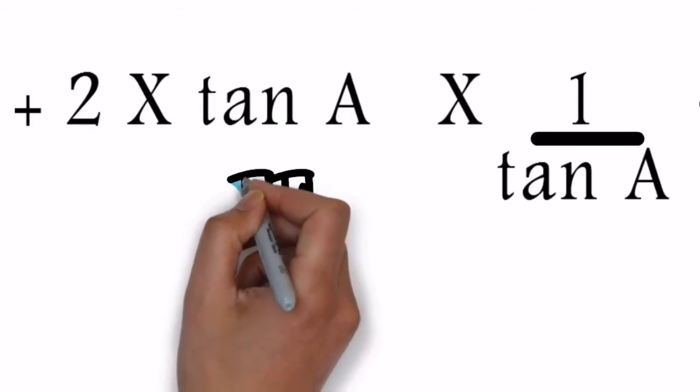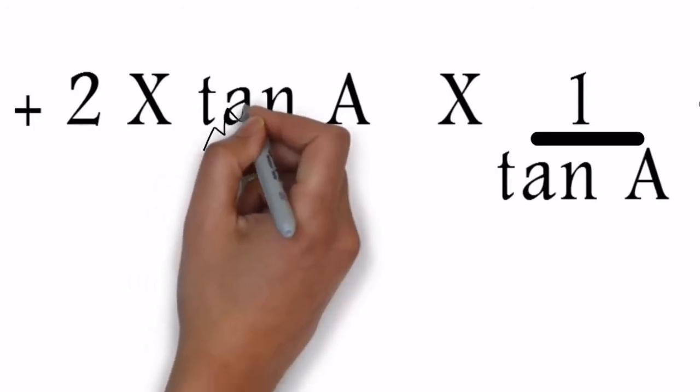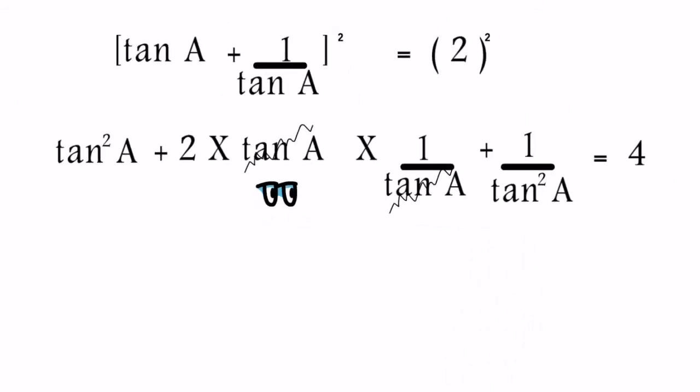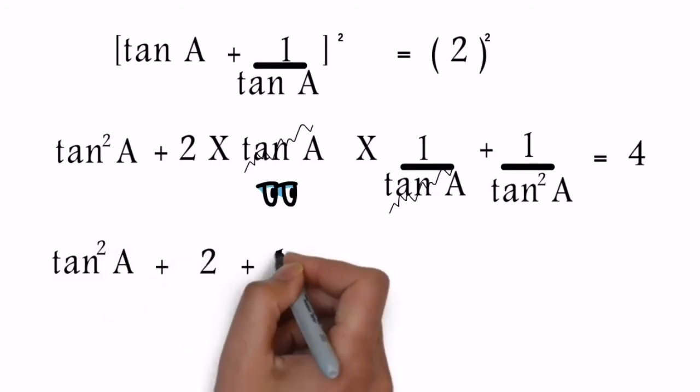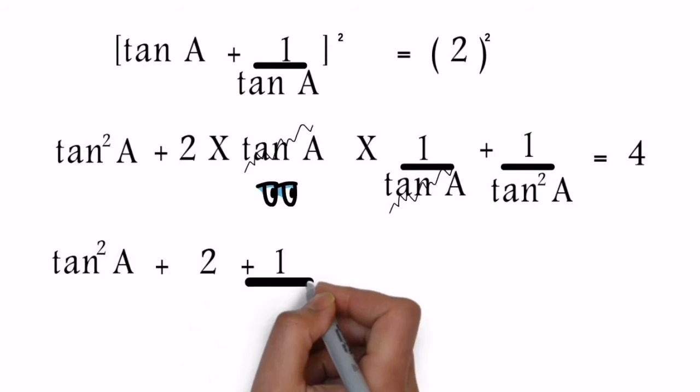Observe clearly now. Here on the screen you can see we can cancel out tan A and 1/tan A as they are in multiplication. We will be left with three terms: tan²A + 2 + 1/tan²A, and after the equality four will remain untouched.